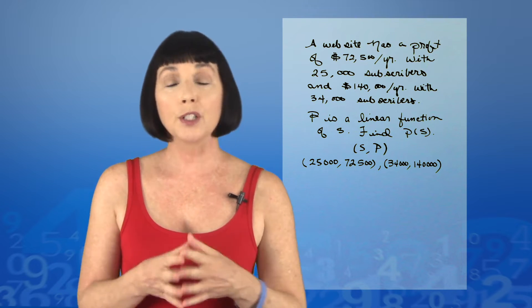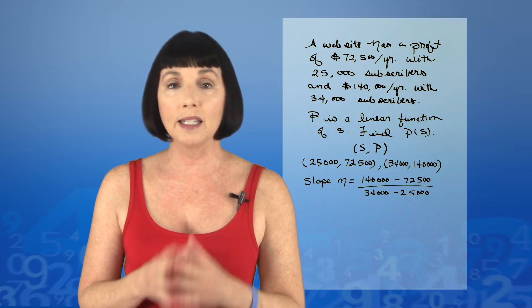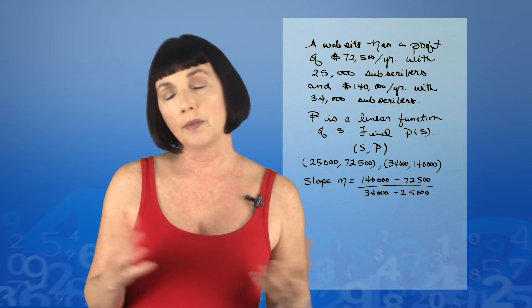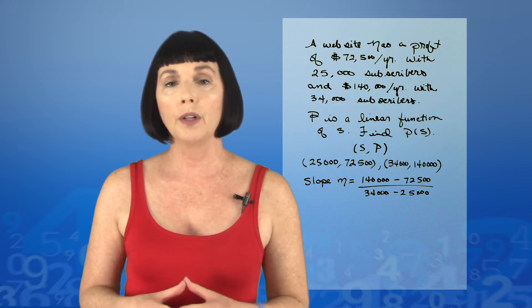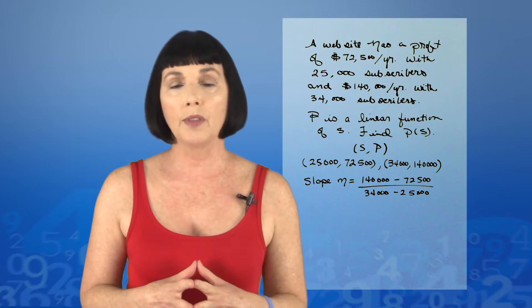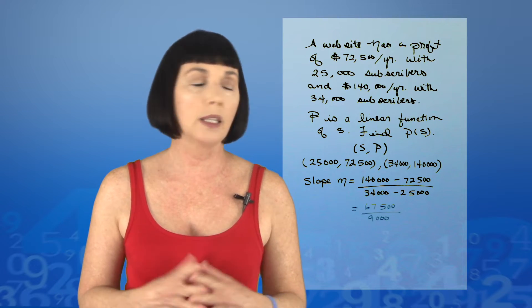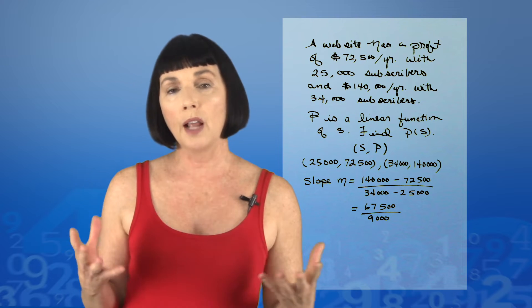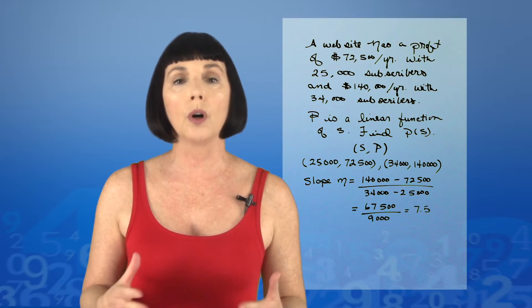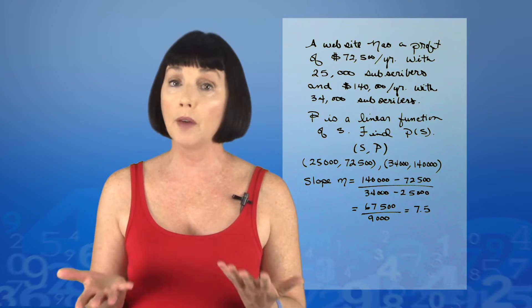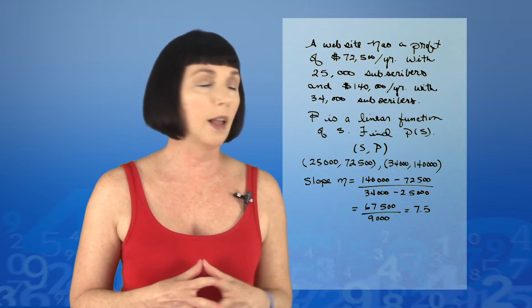Let's find the slope. Our slope m is equal to $140,000 minus $72,500 over $34,000 minus $25,000. That gives us $67,500 over $9,000, or 7.5. So we have a slope of 7.5.